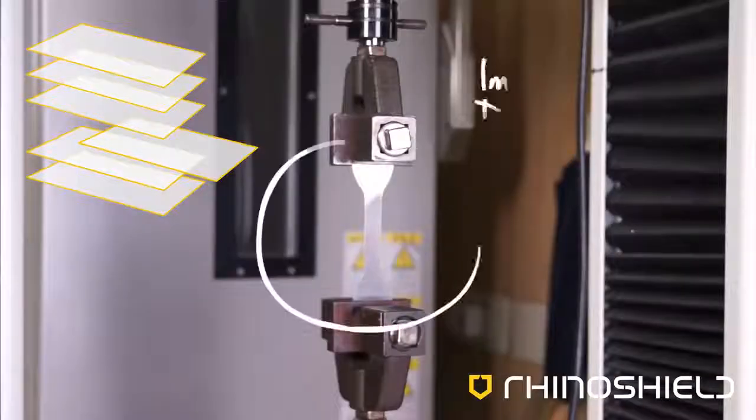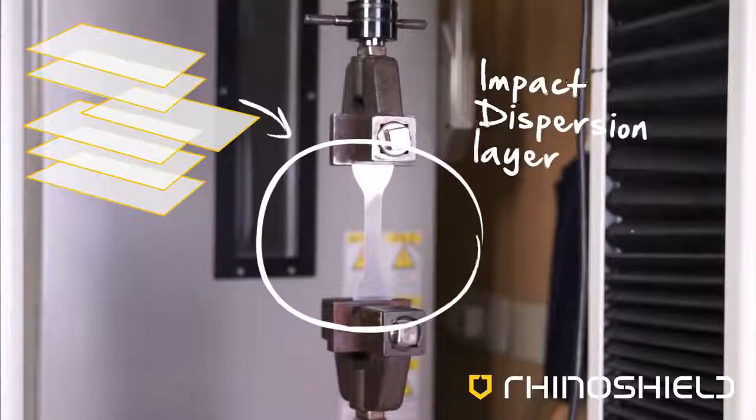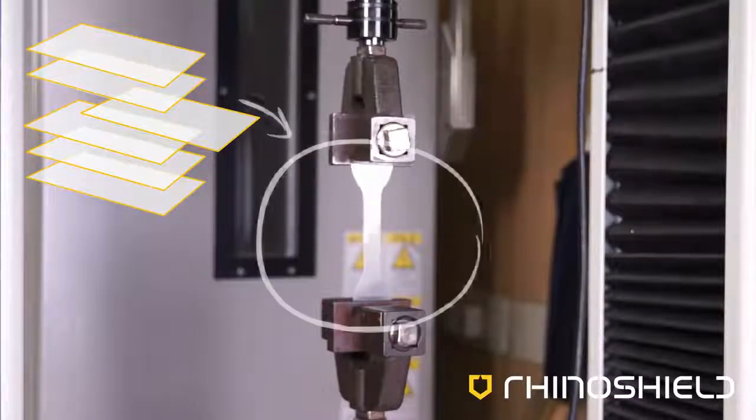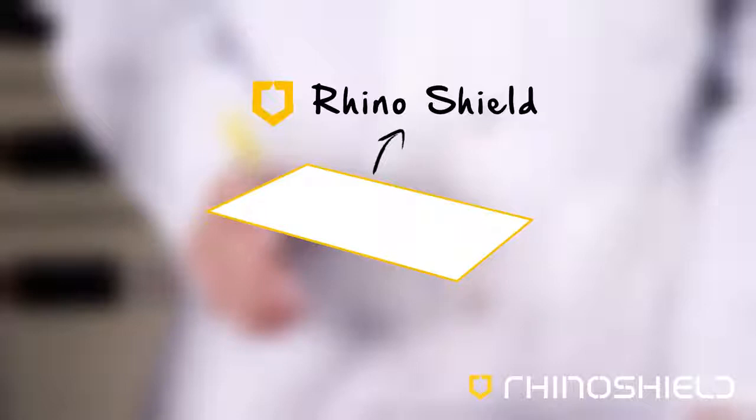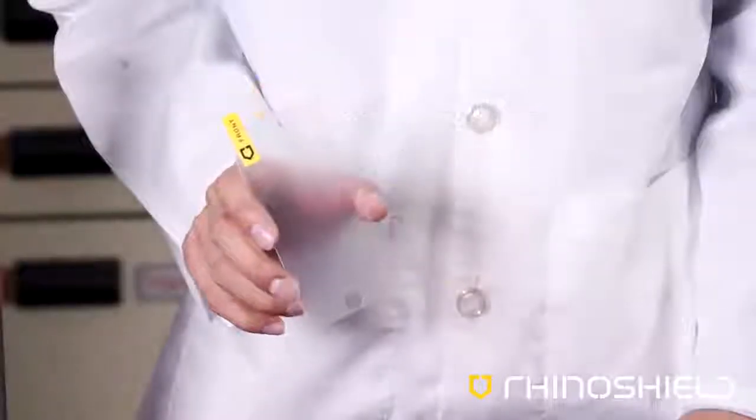The impact dispersion layer is also essential in spreading impact laterally throughout the shield. These two unique layers work in combination with four others. The result is Rhino Shield.